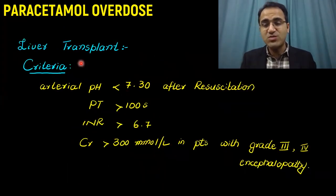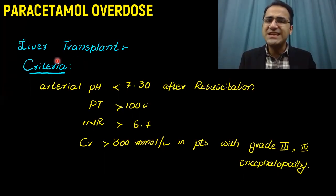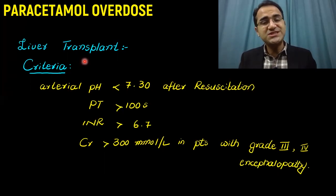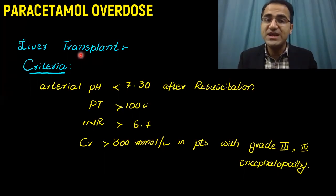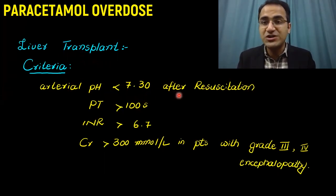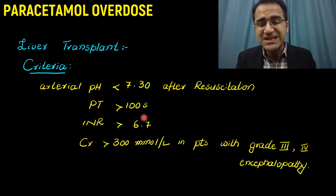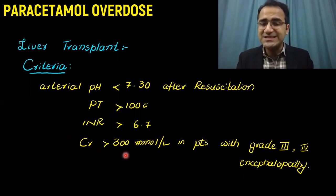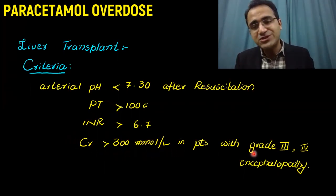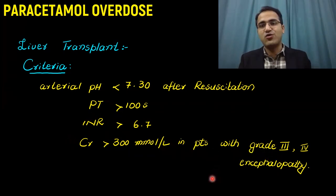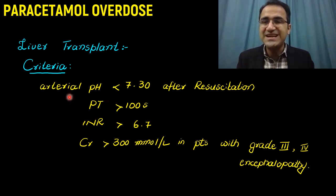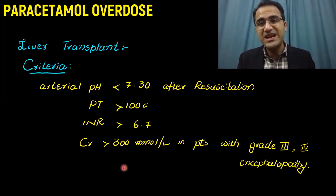In some cases of paracetamol poisoning, liver damage is so extensive that liver transplant is mandatory. Criteria for liver transplant include: arterial pH less than 7.3 even after resuscitation, prothrombin time greater than 100 seconds, INR greater than 6.7, or creatinine greater than 300 mmol per liter in a patient with grade 3 or grade 4 encephalopathy. If the patient meets this criteria, they must undergo a liver transplant as it indicates liver failure and shutdown.